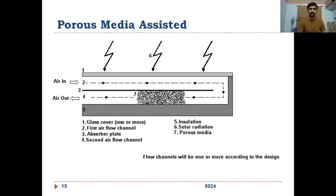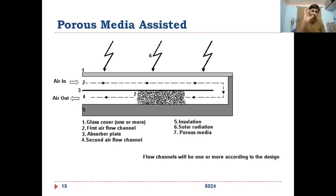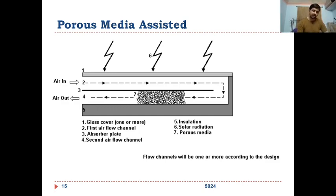The third type in the second classification is porous media assisted. Just below the absorber plate, a porous media — such as gravel or spherical pellets with void spaces for air to flow — is packed in. The advantage is that this porous media has very high heat capacity and stores energy. It is in direct contact with the absorber plate, so heat is transferred by conduction. Air already heated in the top passage is further heated as it passes through the porous media.